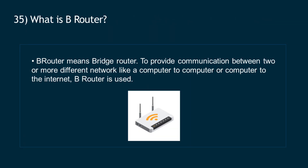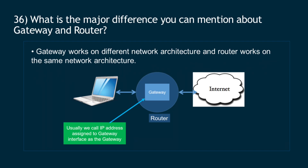Question 35: What is a b-router? B-router means bridge router. To provide communication between two or more different networks — such as computer to computer or computer to the internet — a b-router is used. Question 36: What is the major difference between gateway and router? Gateway works on different network architecture, while a router works on the same network architecture.